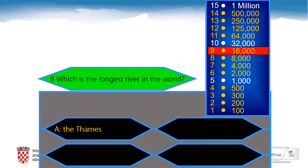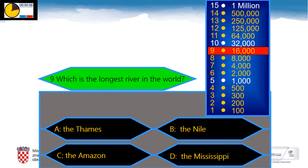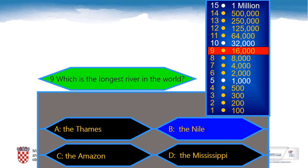Are you ready for question number 9? Which is the longest river in the world? A: The Thames, B: The Nile, C: The Amazon, D: The Mississippi. 8 seconds. The Nile, of course. Don't forget to add 16,000 points to your score if your answer is the Nile.